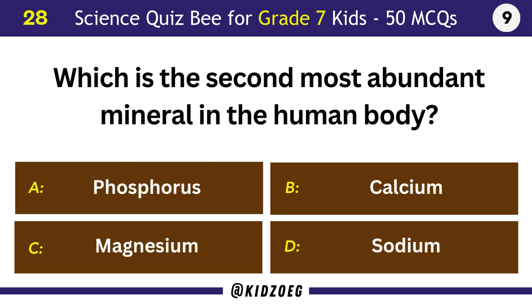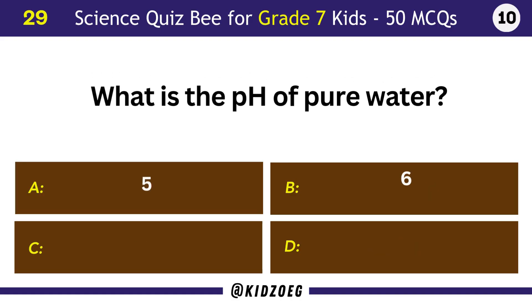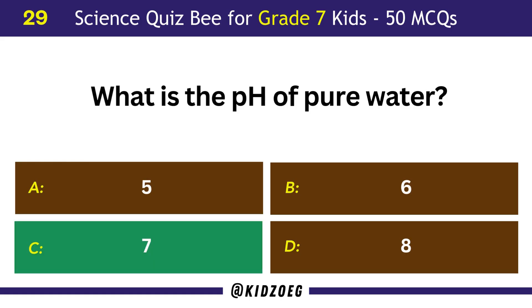Which is the second most abundant mineral in the human body? Phosphorus. What is the pH of pure water? Seven.